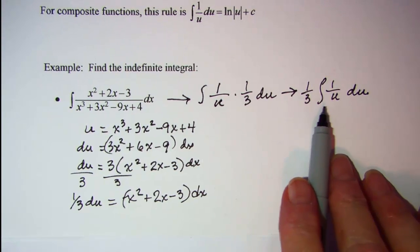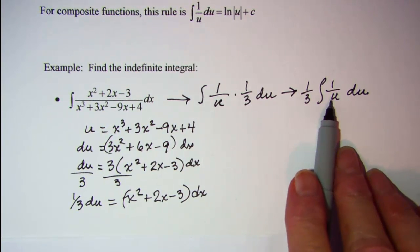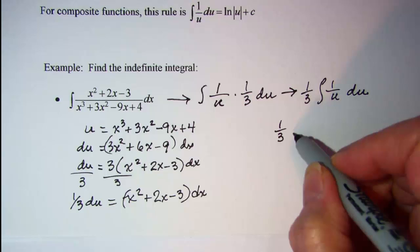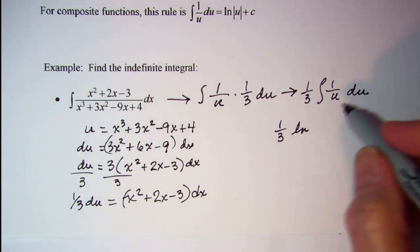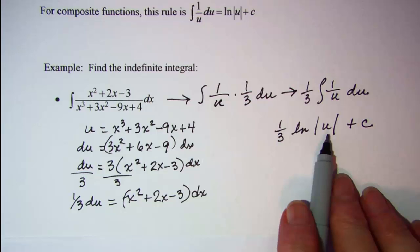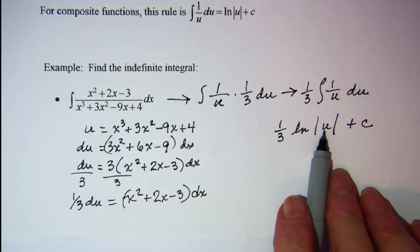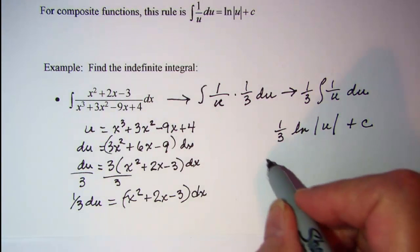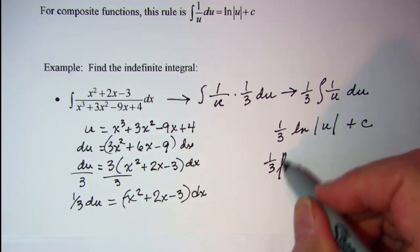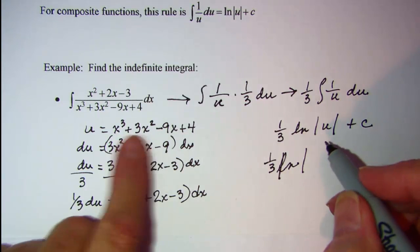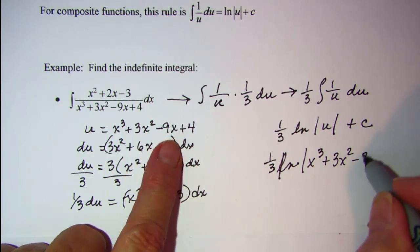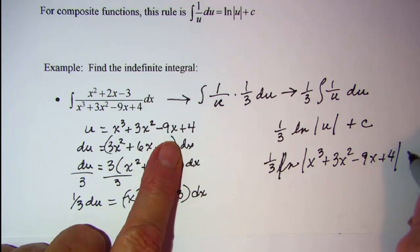Using our rule, we know that's the natural log of the absolute value of u. So this is 1/3 times ln absolute value of u plus constant. I still need to fill in my expression for u, so I have 1/3 times ln absolute value of x cubed plus 3x squared minus 9x plus 4 plus constant.